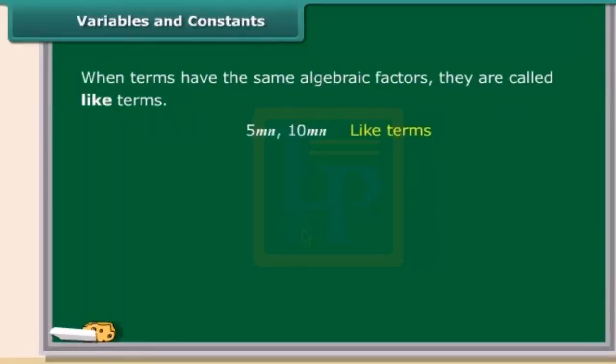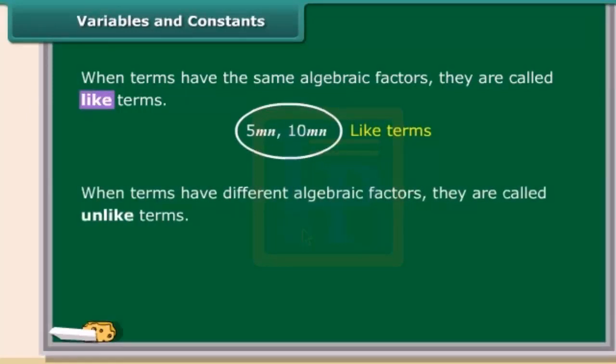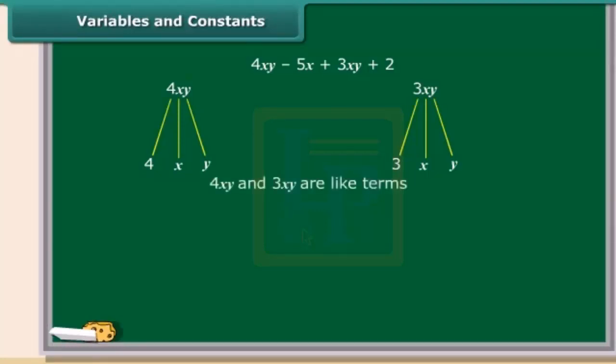When terms have the same algebraic factors, they are called like terms. And when terms have different algebraic factors, they are called unlike terms. Let us see an example. We have an expression 4xy minus 5x plus 3xy plus 2. Now, look at the terms 4xy and 3xy. The factors of 4xy are 4, x and y. Likewise, the factors of 3xy are 3, x and y. So, both the terms have same algebraic factors, which means 4xy and 3xy are like terms.